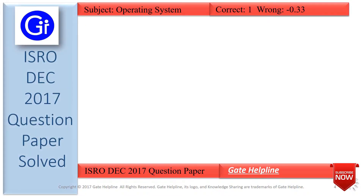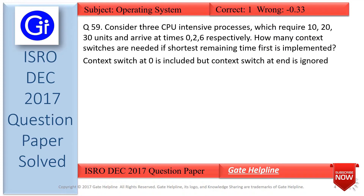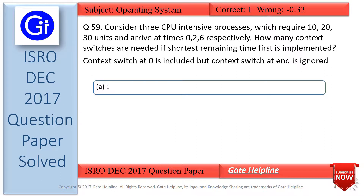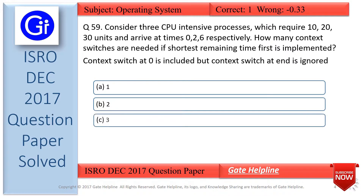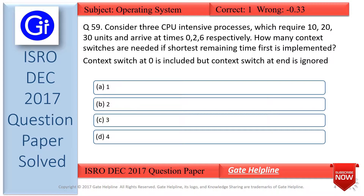Question number 59: Consider 3 CPU intensive processes which require 10, 20, and 30 units and arrive at times 0, 2, and 6 respectively. How many context switches are needed if Shortest Remaining Time First is implemented? Context switch at time 0 is included but context switch at the end is ignored. Options are A) 1, B) 2, C) 3, and D) 4.